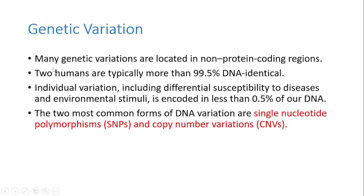Many genetic variations are located in non-protein-coding regions. Two humans are identical by 99.5 percent and differ only by 0.5 percent. Individual variations, including differential susceptibility to diseases and environmental stimuli, are encoded in this 0.5 percent only. This means some individuals are susceptible to certain diseases while others of the same sex and age are not, because of variations present in this 0.5 percent of their DNA.